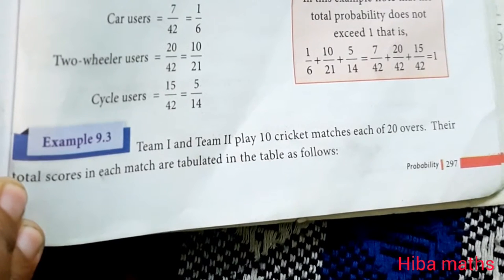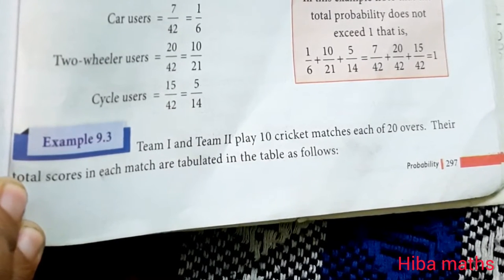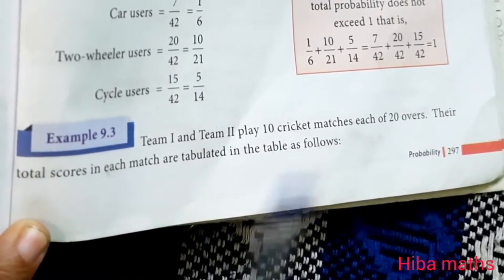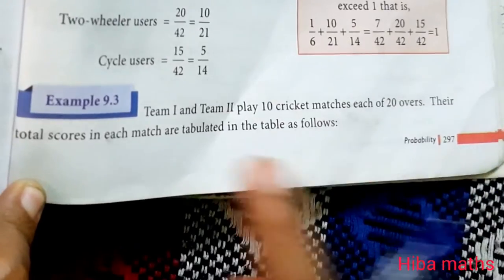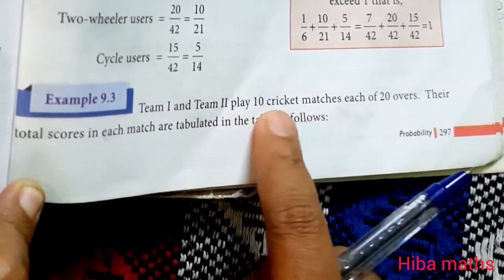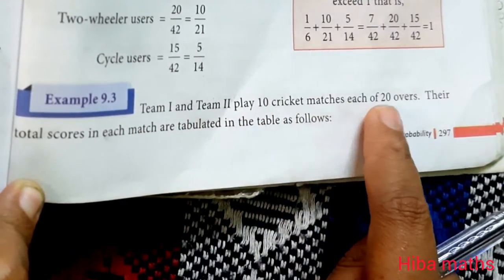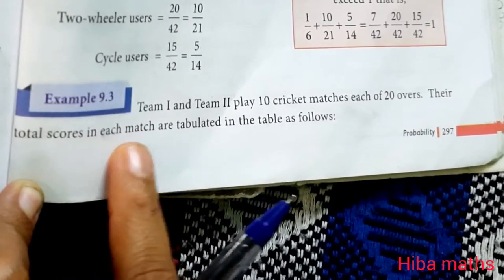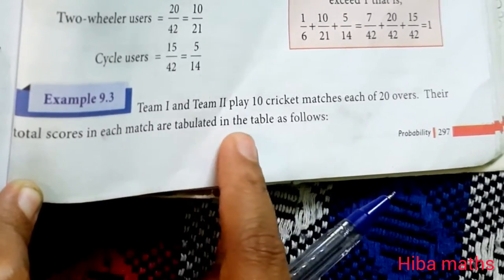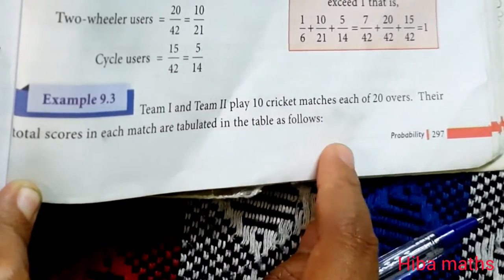Hello students, welcome to Hiba Maths, 9th standard maths, Chapter 9, Example 9.3. This is what we are explaining in the book. Team 1 and Team 2 played 10 cricket matches of 20 overs each. Their total scores in each match are tabulated in a table as follows.